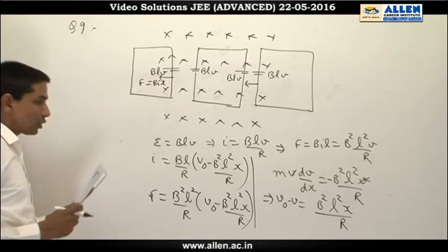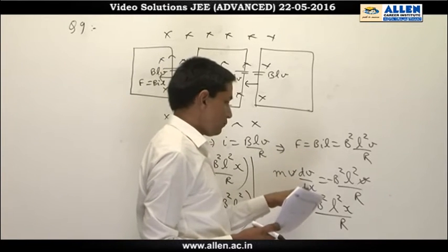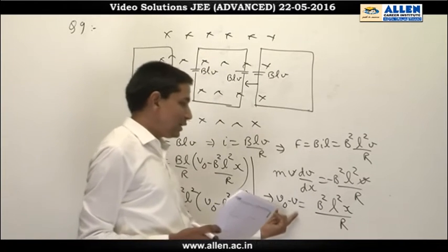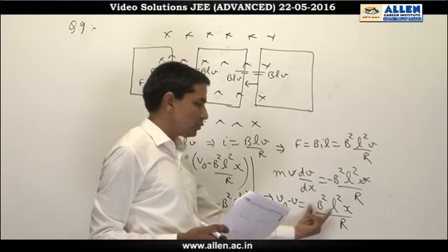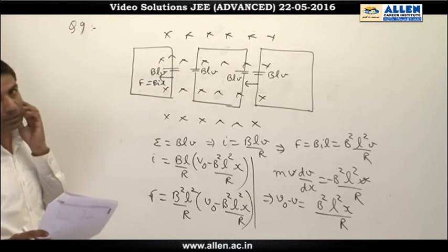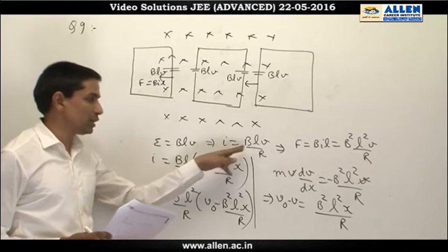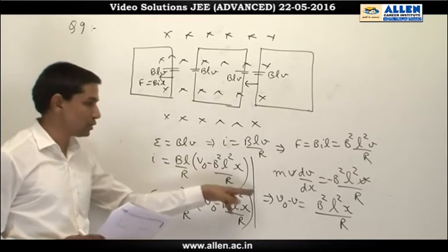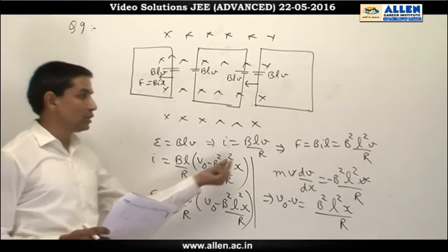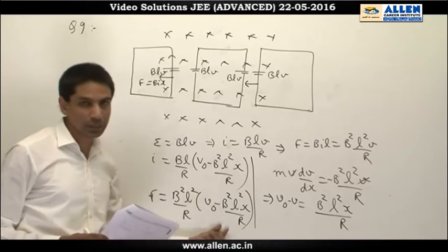The force tries to retard the motion. By taking force equal to mass times acceleration, m·v·dv/dx, the v cancels out, and by integrating we get v₀ − v = B²l²x/(mR). That means v and x have a linear dependence on each other. Current also has a directly proportional linear relationship with velocity, so it is also in a linear relationship with x. And since force also has a linear relationship with speed, force also has a linear dependence on x.